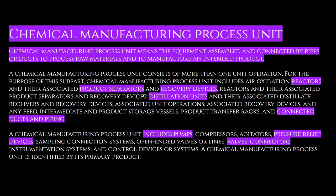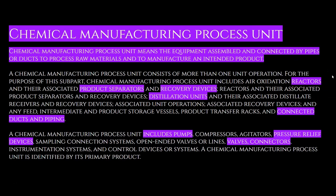As I began to develop the theory that the Egyptian pyramids were designed to produce chemicals on an industrial scale, I started by evaluating the components of the pyramids — their chamber and shaft systems — as potentially being individual units of a chemical manufacturing process. A chemical manufacturing process unit means the equipment assembled and connected by pipes or ducts to process raw materials and manufacture an intended product.